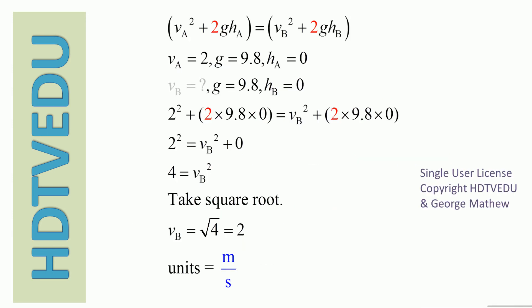We substitute the known values: starting speed is 2 meters per second, acceleration due to gravity is 9.8, height at point A is 0, and height at point B is also 0. So the terms with height go to zero, and we are left with 2 squared and Vb squared.